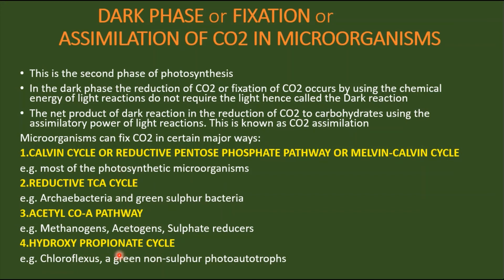The first pathway is the Calvin cycle, which is also called the Calvin-Benson cycle, or Melvin Calvin cycle, or the reductive pentose phosphate pathway — which is essentially the reverse of the pentose phosphate pathway. The Calvin cycle is observed in most photosynthetic microorganisms.